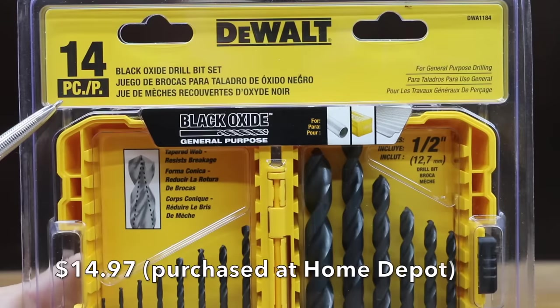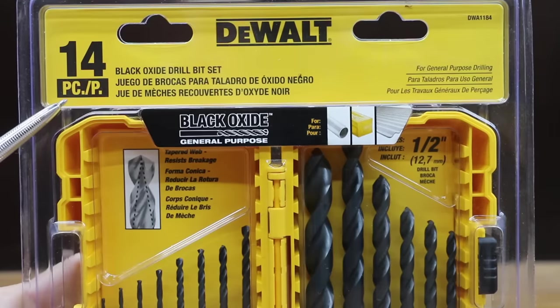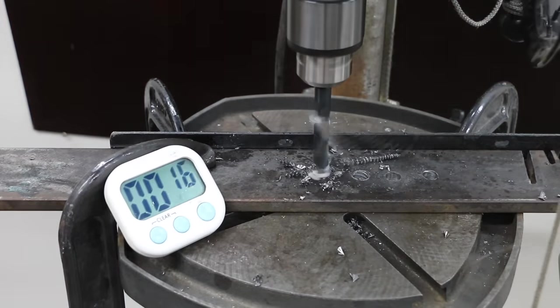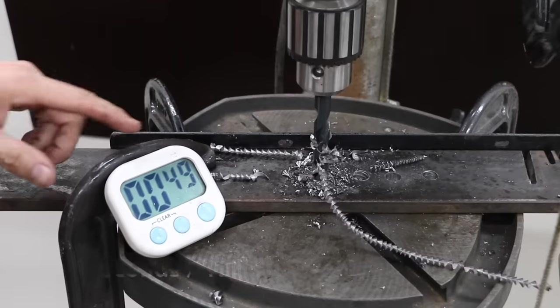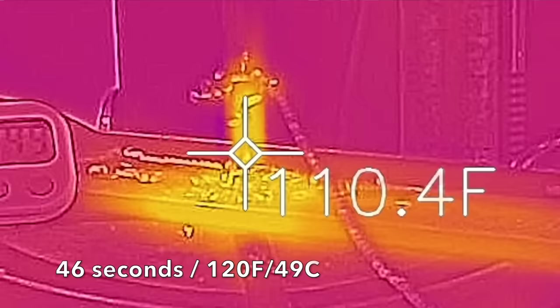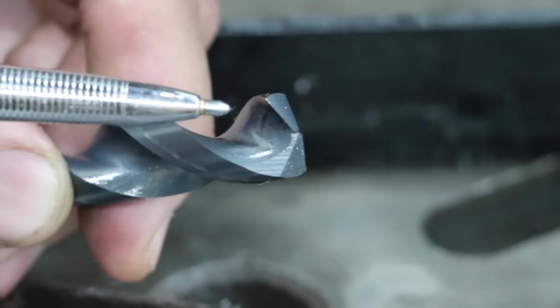Costing $14.97 are these Black Oxide standard tip drill bits made by DeWalt. It's the fastest time yet. The temperature is about 120 degrees, very close to the same as the Craftsman. There's no visible damage to the DeWalt drill.